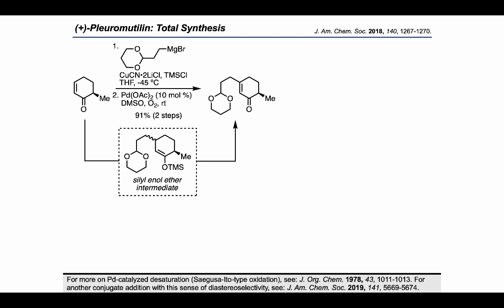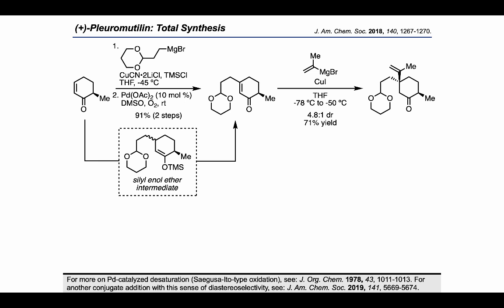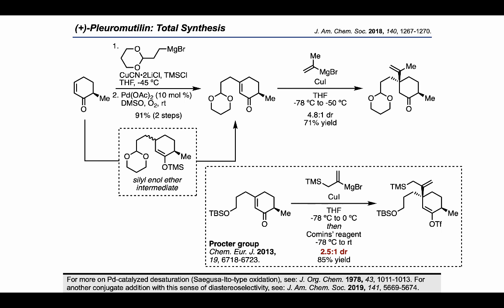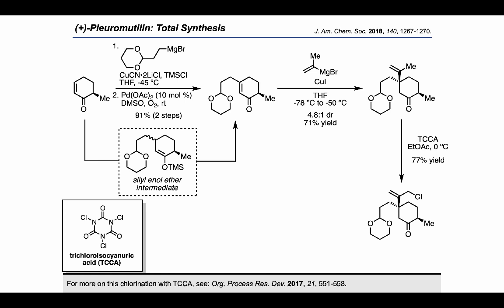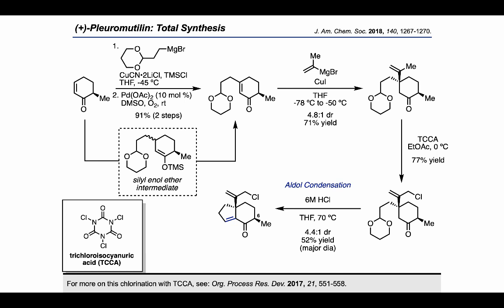Then another conjugate addition allowed them to set the quaternary stereocenter in this product with relatively high diastereoselectivity. As a point of comparison, a similar conjugate addition in the Proctor route, which used a comparable nucleophile and electrophile, only provided the product in 2.5 to 1 DR. Then, having introduced the propenyl group, the authors carried out an allylic chlorination using trichlorocyanuric acid (TCCA). They were subsequently able to close up the five-membered ring using an aldol condensation, which resulted in a small amount of epimerization at C6, presumably due to some enol formation under the reaction conditions.